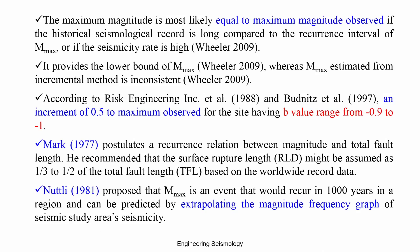The observed maximum magnitude provides a lower bound for Mmax. The incremental method — Method 2 — is inconsistent. According to Risk Engineering Limited 1998 and Bedines et al. 1994, an increment of 0.5 is added to the observed magnitude. But this number is arbitrary — some people take 0.3, some take 1.0. There is no consistency or physical reason for the chosen increment value.